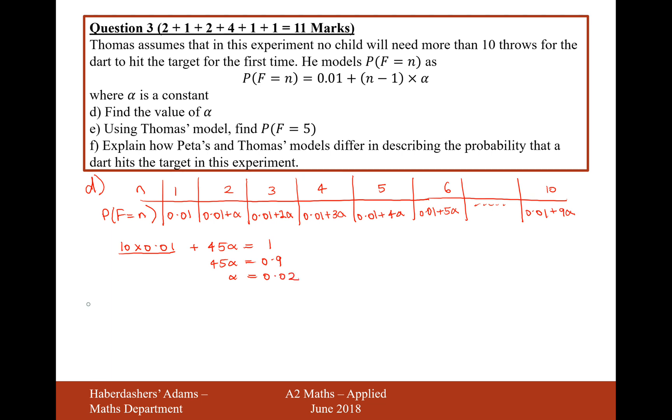So moving on to part E now. Part E is using Thomas' model find the probability of F equals 5. Well, that's going to be this value here. So that's going to be 0.01, add 4 times 0.02, which is going to be 0.09. So 0.09 is the answer to E.